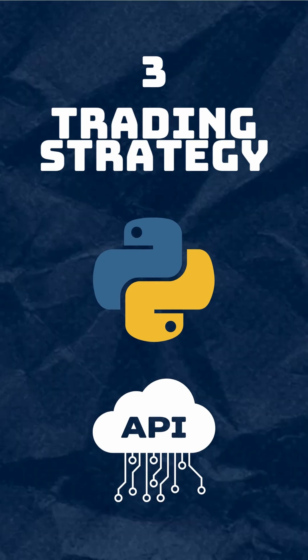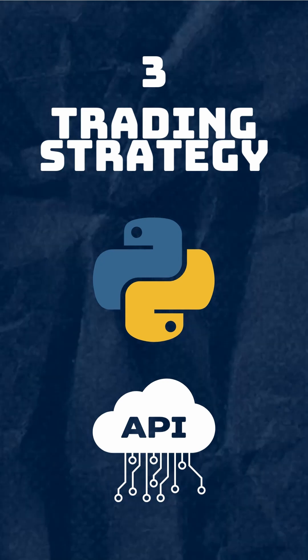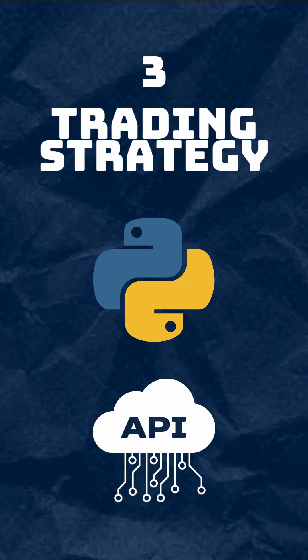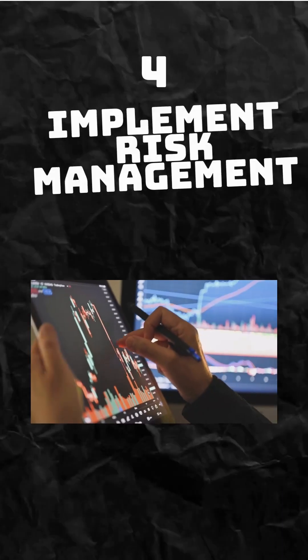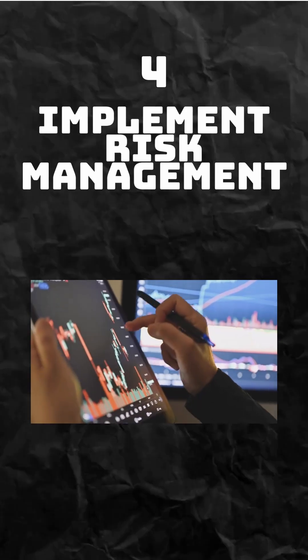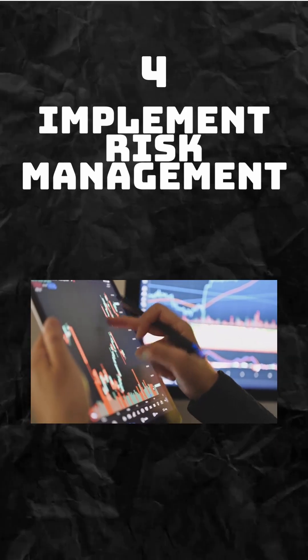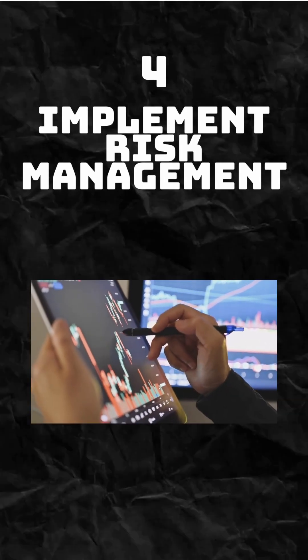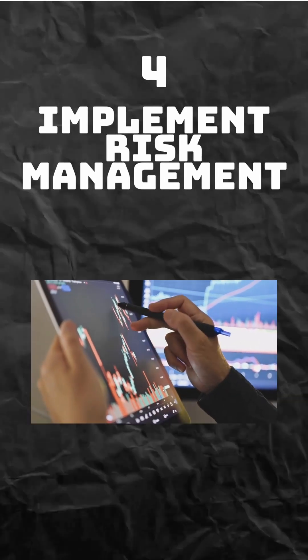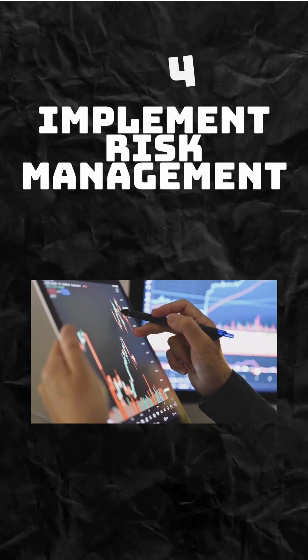Execute orders using your broker's API — Python's speed ensures orders are sent and executed rapidly. Implement risk management to protect your capital. Set stop loss and take profit levels to minimize losses.